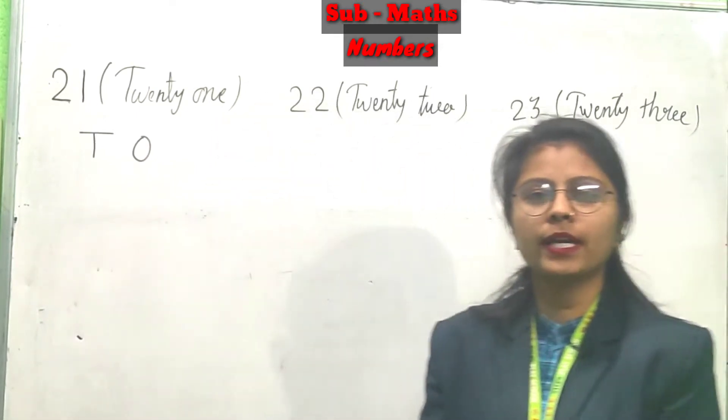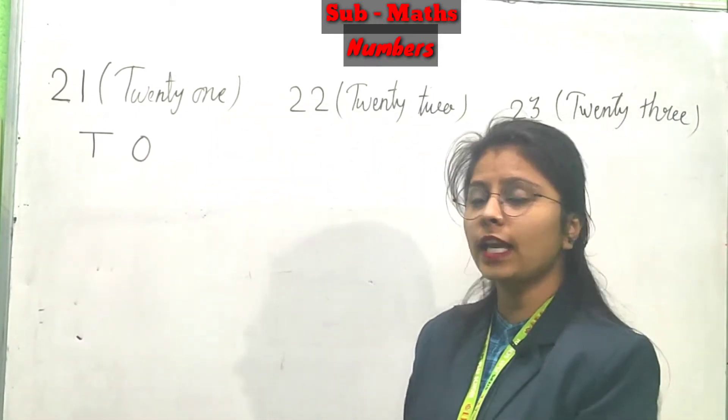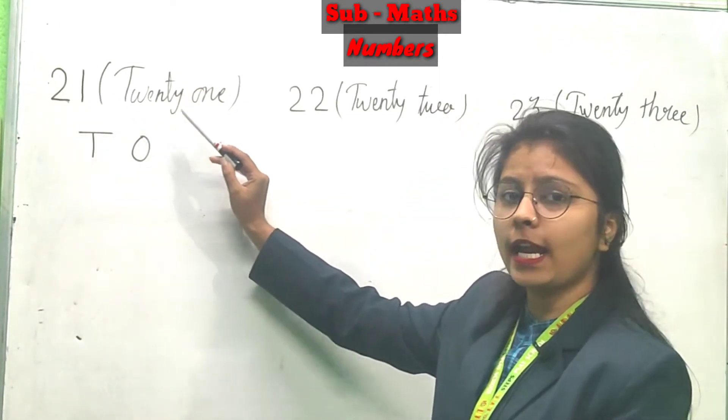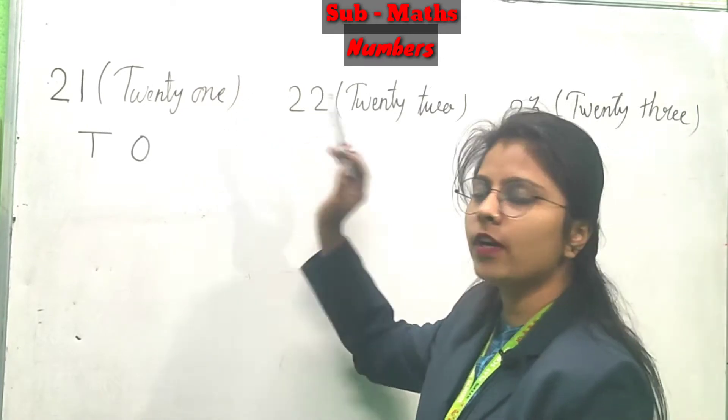Batcho, you know what we will do today? We will do numbers. Which numbers we will do? Which number is this? 21, T-W-E-N-T-Y twenty, O-N-E one.